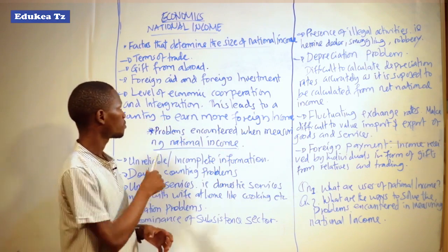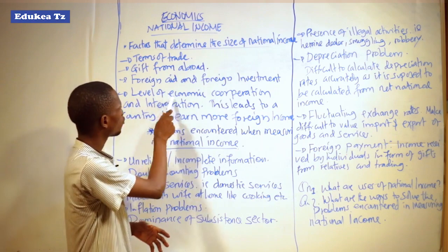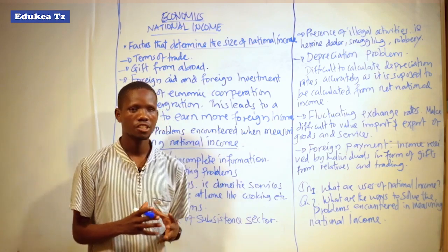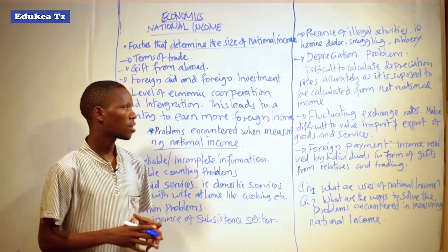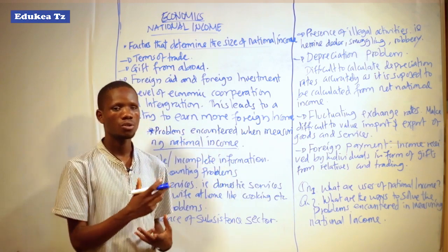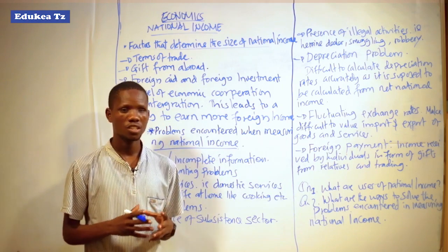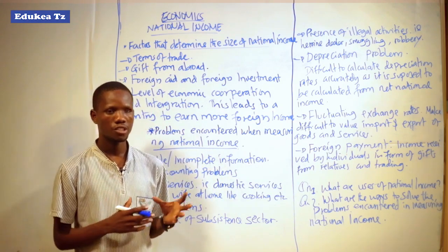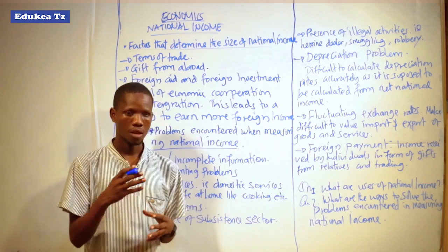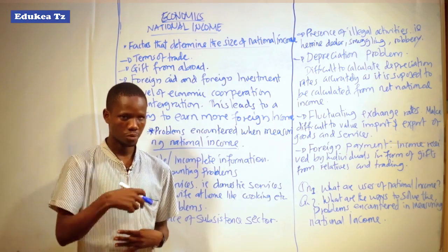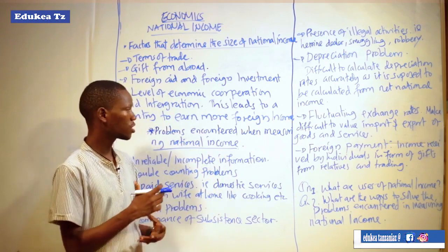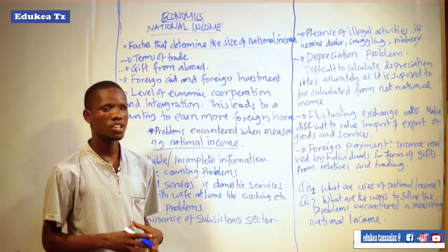Another factor that determines the size of national income is the level of economic cooperation. There are different economic regional integrations, but some countries do not engage much in economic cooperation. When a country involves itself with other countries in economic activities — especially through exchanging goods and services by exporting and importing — and exports domestically produced goods to other countries to meet the market, this increases national income.